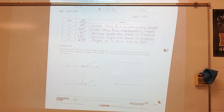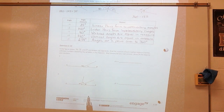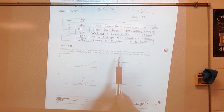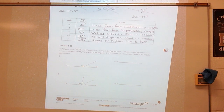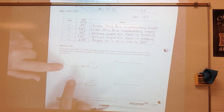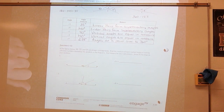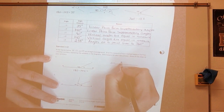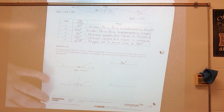In the figures below, segments AB, CD, and EF are straight line segments. Find the measure of each marked angle and give reasons for your calculations. If AB is a straight line, then 180 minus 144 would give me the measure of 36 degrees for angle A, because linear pairs form supplementary angles.